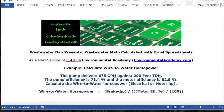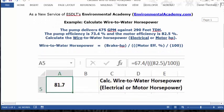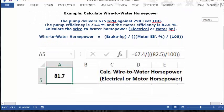Let's start with the formula to calculate the wire-to-water horsepower. You can open up a blank spreadsheet, put your cursor in C1, and type this description: calculate wire-to-water horsepower, and then you can put in electrical or motor horsepower also.